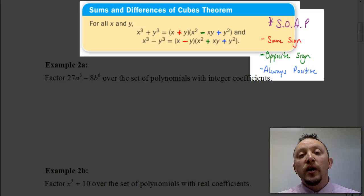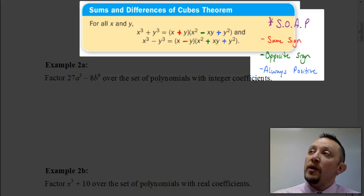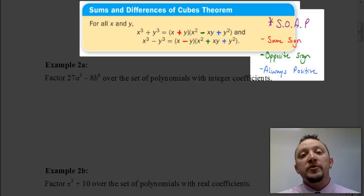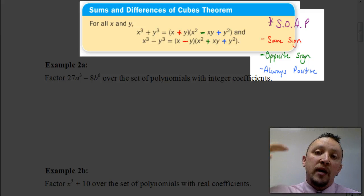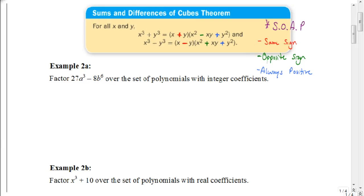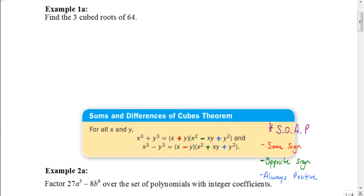Now there are a couple of situations where we could apply the sum and difference of cubes. Here's a scenario: they're asking us to find the three cubed roots of 64 — essentially, what three numbers could I cube to get 64. If I want to express it as a difference of cubes, I subtract 64 from both sides and get X cubed minus 64 equals 0, so I want to factor X cubed minus 64.